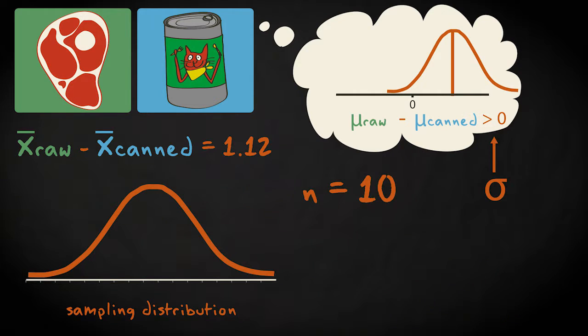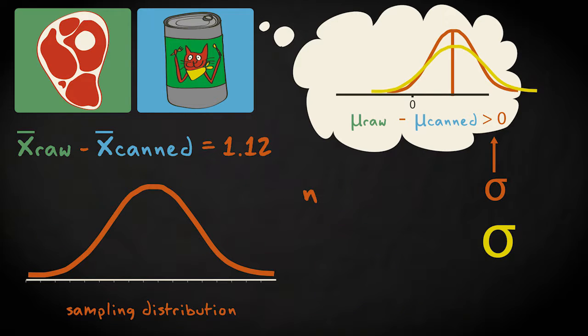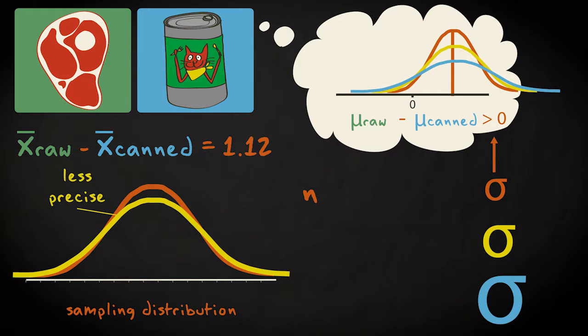The shape is also affected by the sample size and variation in the population, which influences the precision of the sample statistic. Bigger samples provide more precise estimates of the population parameters. Large variation in the population results in less precise estimates, so a wider sampling distribution.